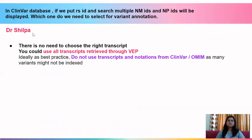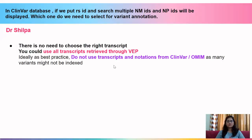The next question is by Dr. Shilpa, who asks: in ClinVar, if we put an RSID and search, multiple NMIDs and NPIDs will be displayed — which should we select? There is no need to choose the right transcript. Use all transcripts retrieved through VEP. Do not use transcripts and notations from ClinVar or OMIM as they might not be updated or indexed. Use all annotations given out by VEP and do not pick and choose among transcripts.